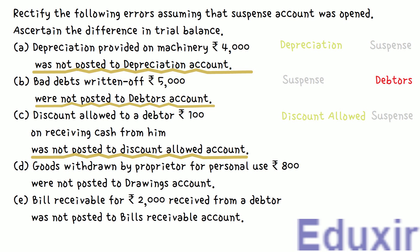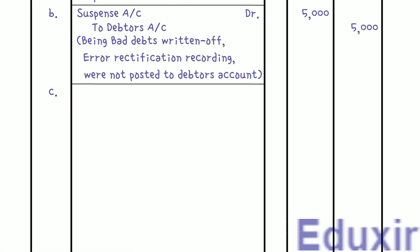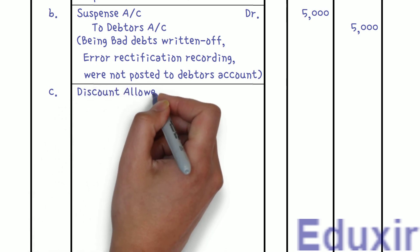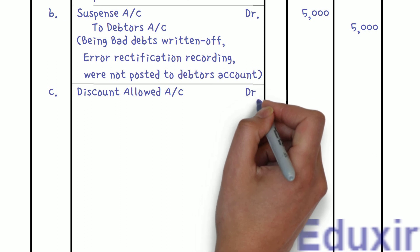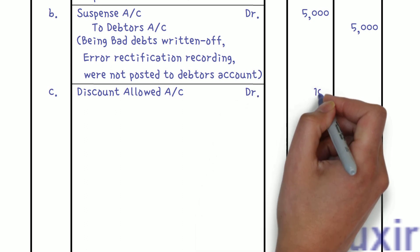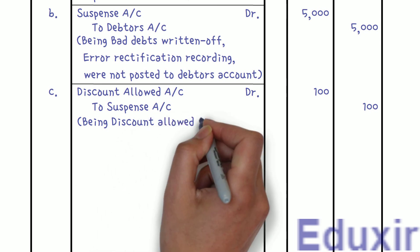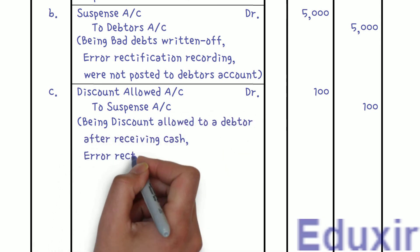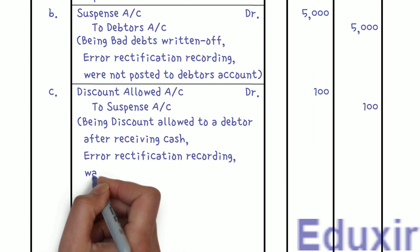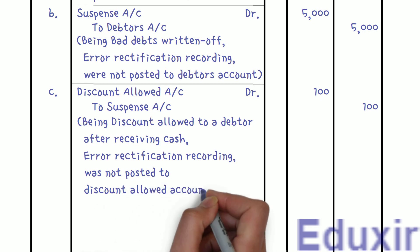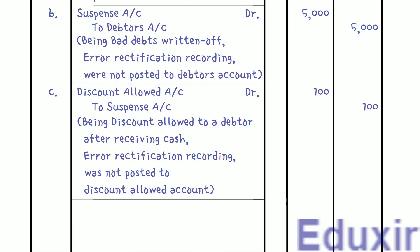Let us now record the journal entry. Discount Allowed Account Dr — 100 rupees. To Suspense Account — 100 rupees. Narration: Being discount allowed to a debtor after receiving cash; error rectification recording, was not posted to Discount Allowed Account. That completes the recording of these error rectification entries.